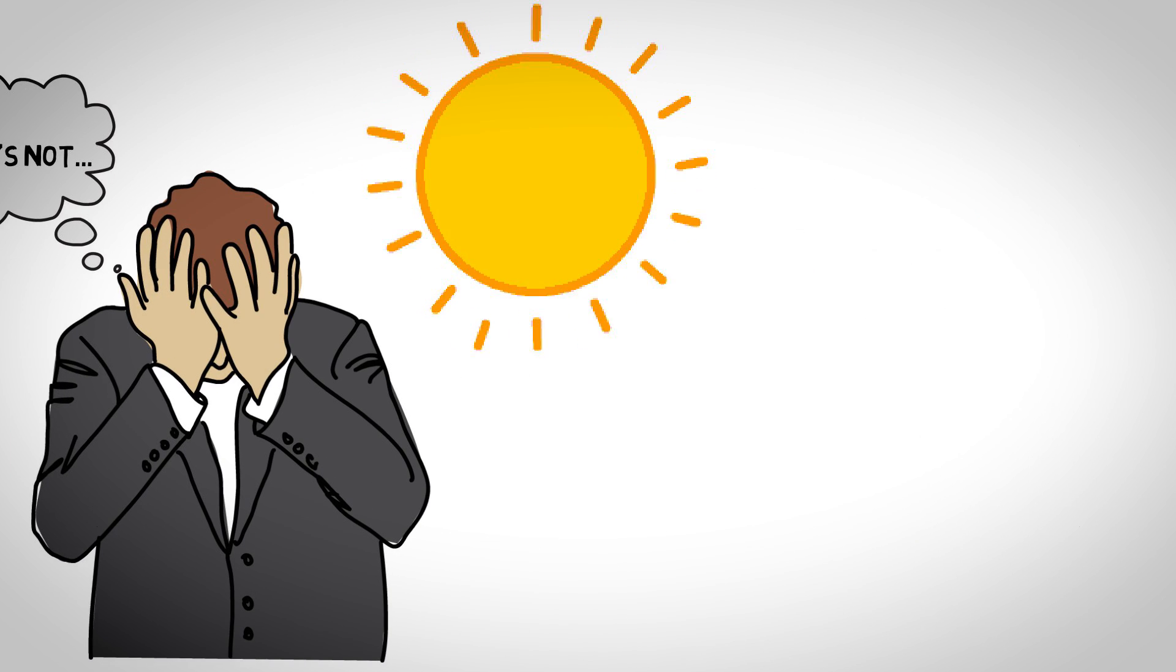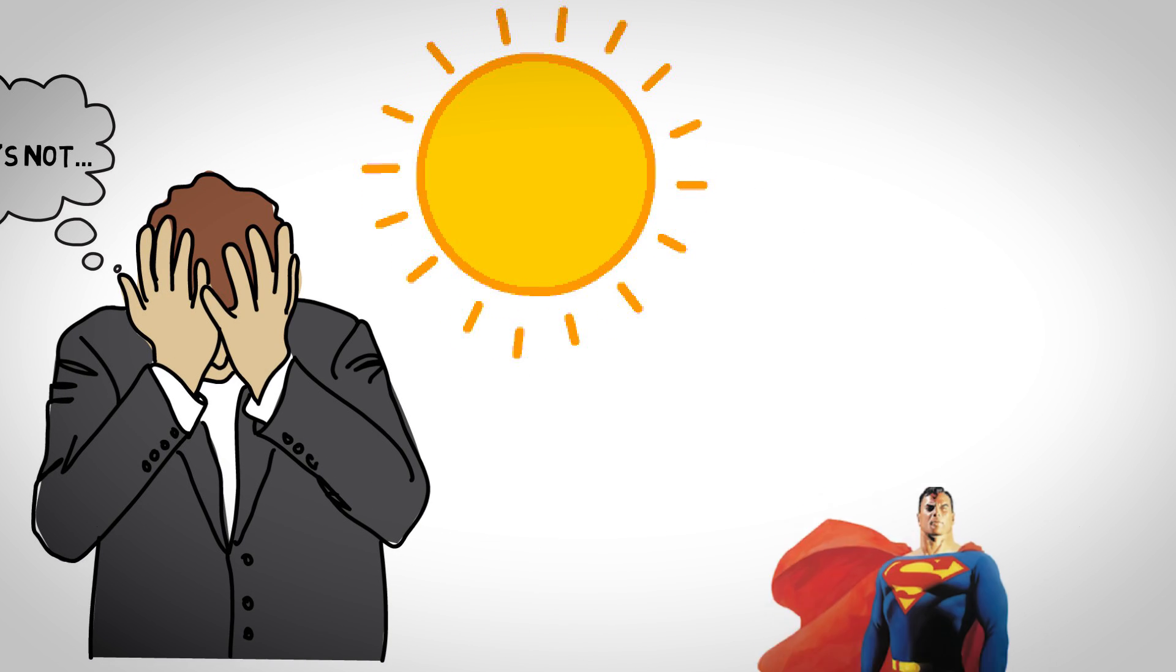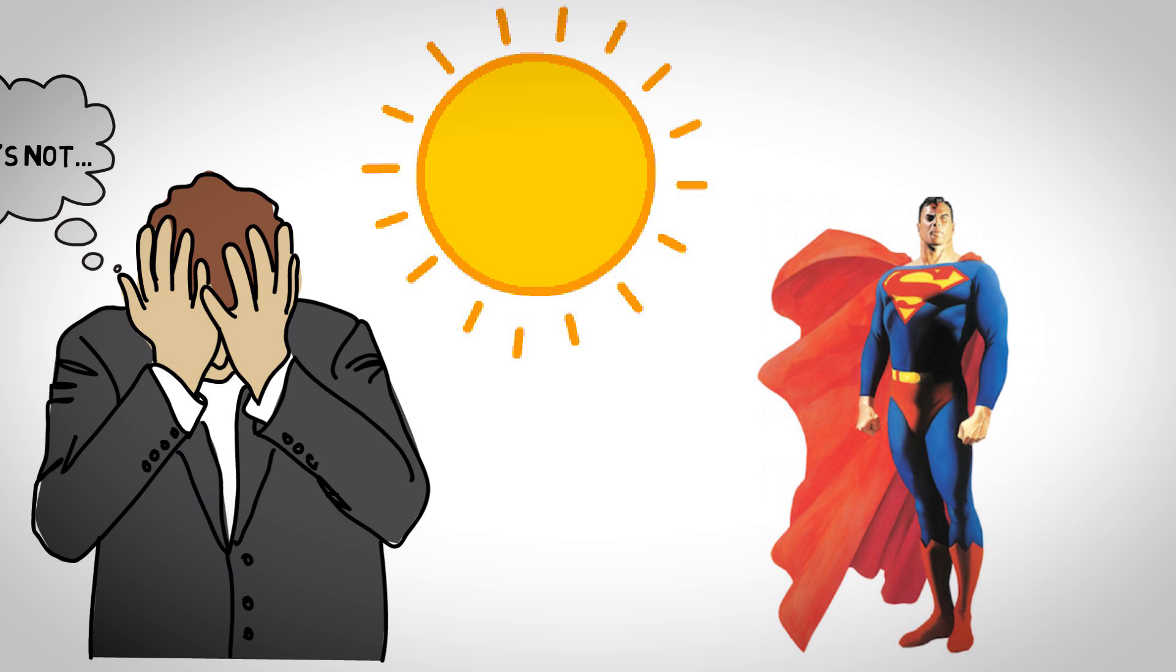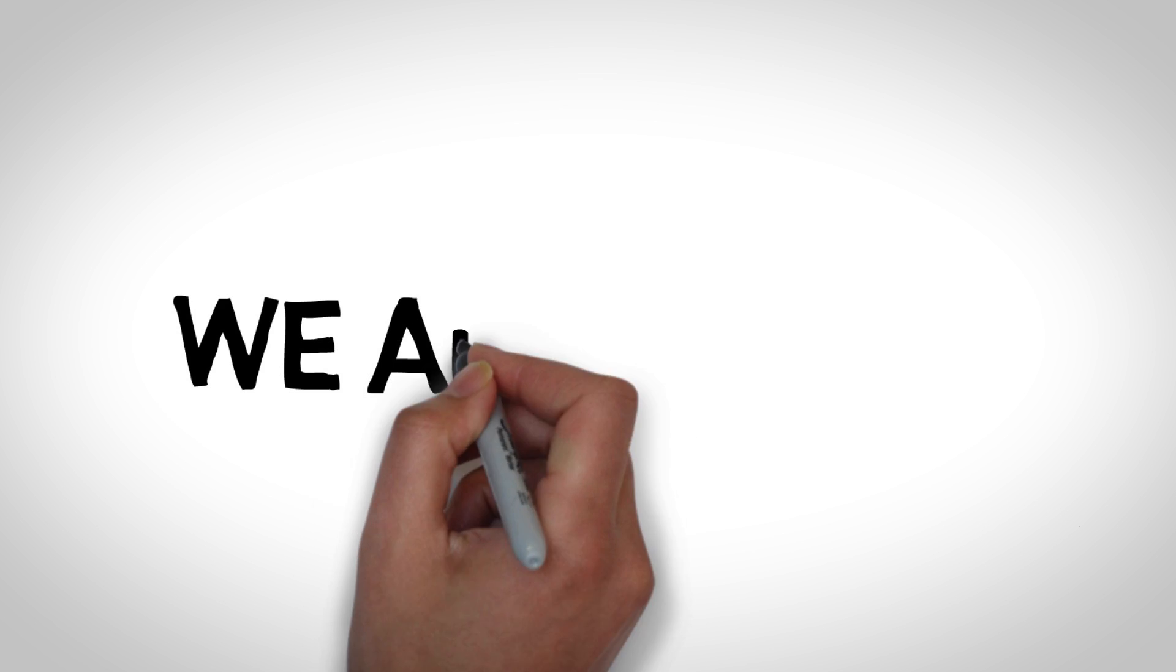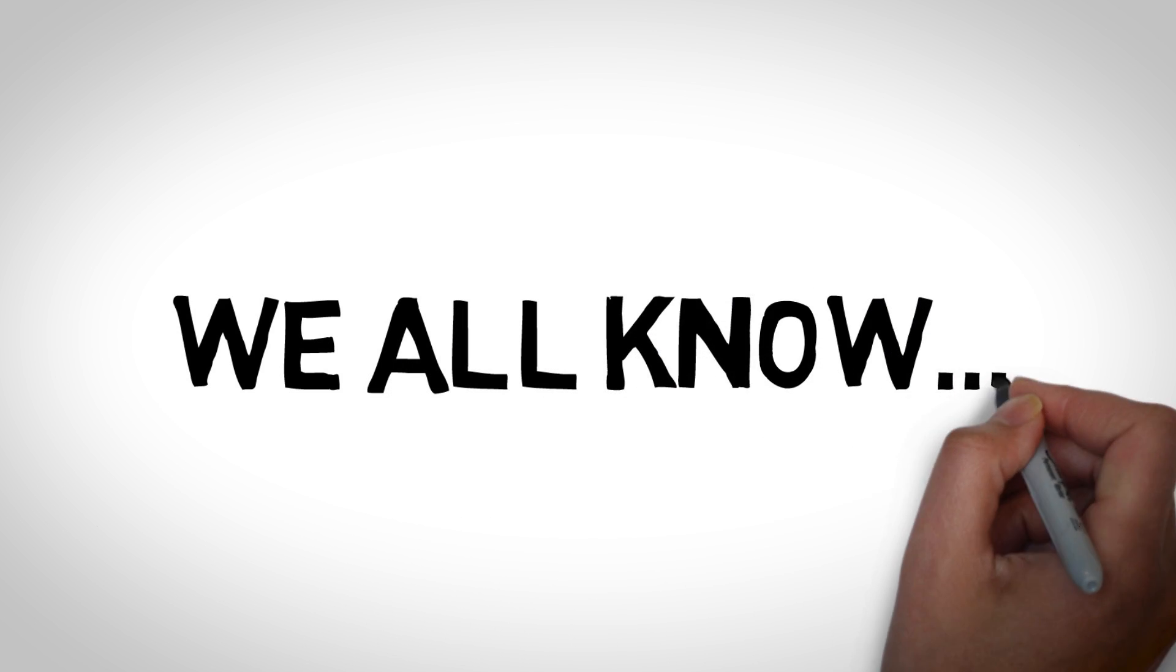We all know that the Sun is a yellow star. That's how Superman gets his powers, of course. And we all know that it's always shining somewhere on the Earth. We all know. But do we really know?